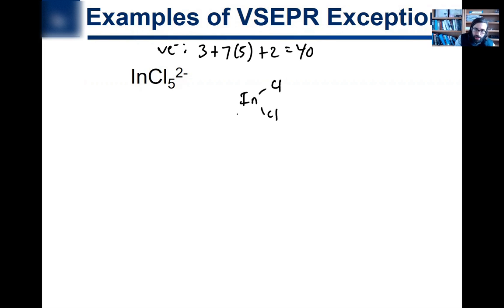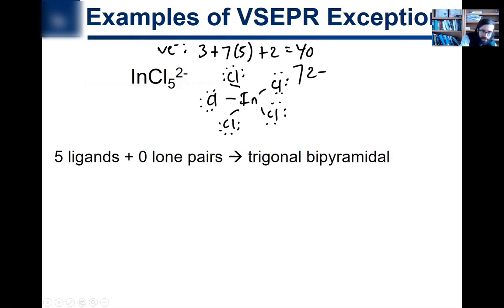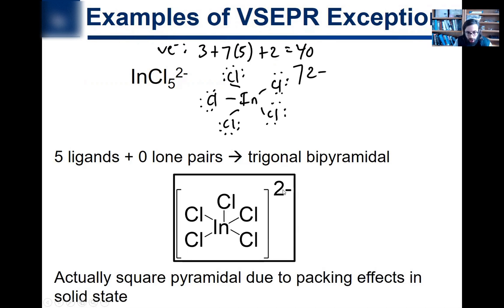So this gets you three plus 35 is 38, and 40 valence electrons. What does VSEPR say here? What's the Lewis structure going to be? We're going to put indium as the central atom since it's way less electronegative than chlorine. We're going to put our valence electrons here and give all the chlorines a complete octet. Eight times five is 40, so we're good. The prediction would be we have five ligands and zero lone pairs around the central atom, so it should be trigonal bipyramidal. What's the actual structure? Square pyramidal.